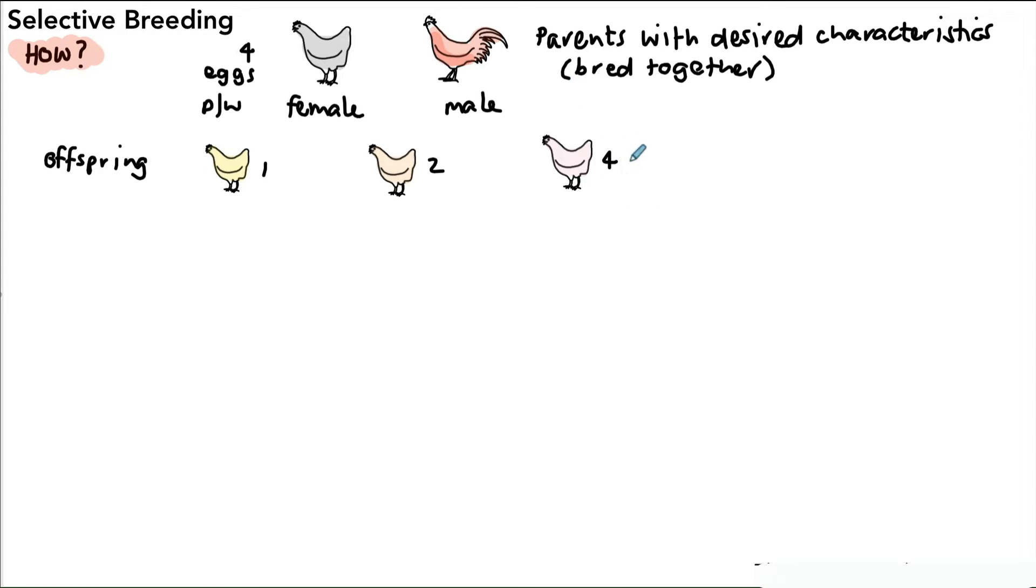So what we then do next is we would take this chicken that produces the four eggs and breed it again for another generation. So then we look at the next set of offspring in the next generation, and then we would have more of those chickens that produce the four eggs.